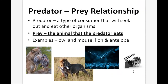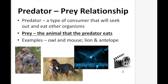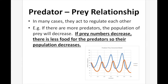Predator-prey relationships. A predator is a type of consumer that will seek out and eat other organisms. A prey is the animal that the predator eats — for example, owl and mouse, or lion and antelope. In many cases, they act to regulate each other. If there are more predators, the population of prey will decrease. If prey numbers decrease, there's less food for the predators, so their population also decreases. You can see this in the graph — as rabbit population rises, wolves increase because there's more food. As wolves increase, they eat more rabbits, causing rabbit population to drop, which then causes wolf population to drop, and the cycle repeats.